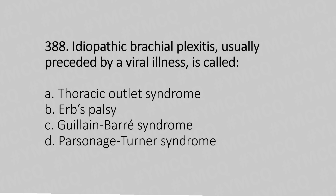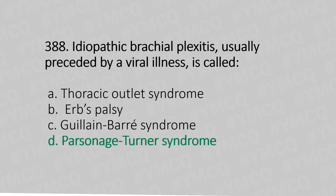Question 388: Idiopathic brachial plexitis usually preceded by viral illness is called? Option A: thoracic outlet syndrome. Option B: Parsonage-Turner syndrome. Option C: Guillain-Barré syndrome. Option D: Parsonage-Turner syndrome. The answer is Option D: Parsonage-Turner syndrome.